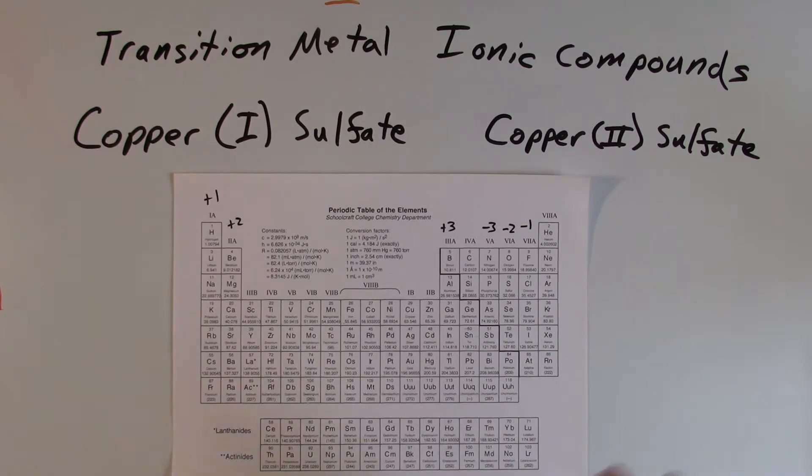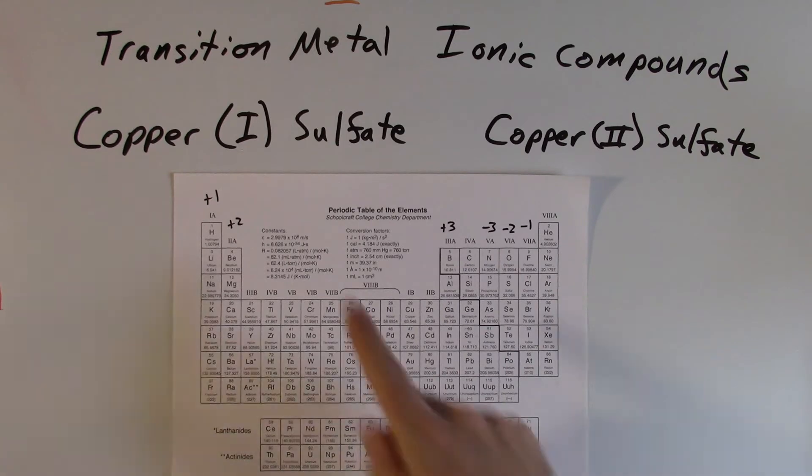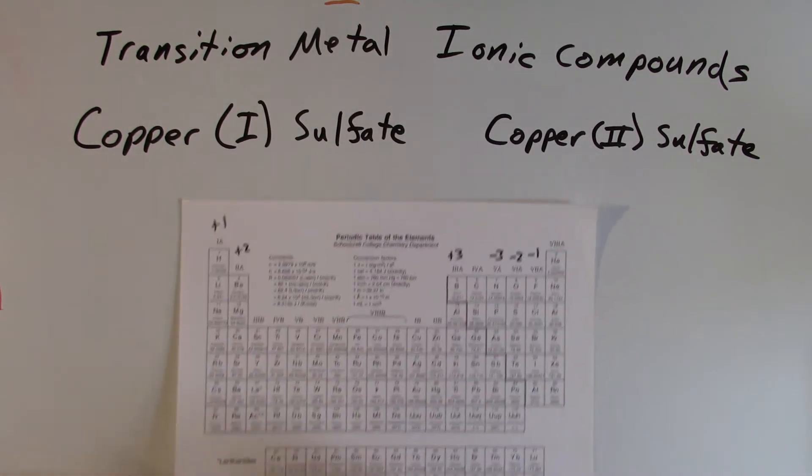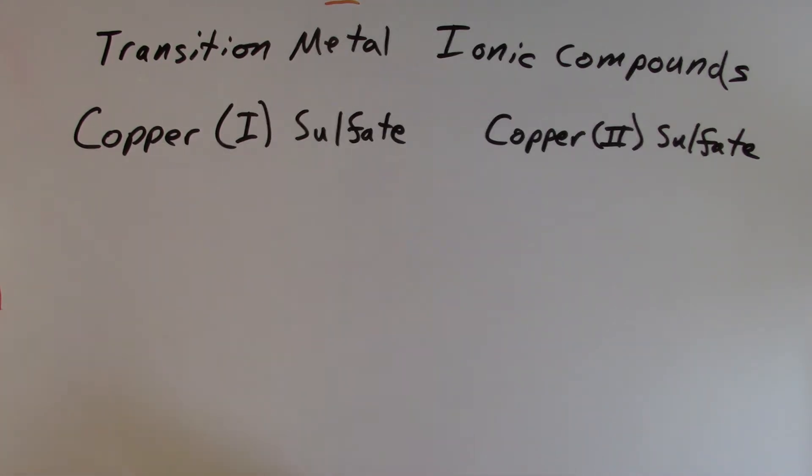So we want to look at then, what do those Roman numerals mean? Well, the Roman numeral means it's referring to what the charge is on that copper atom. It's not how many copper atoms there are. It's telling us what the charge is. So it makes it really easy, actually, to write the formula for one of these.